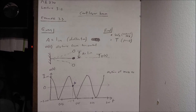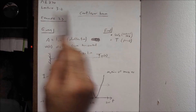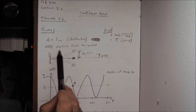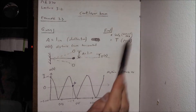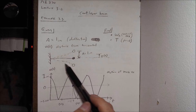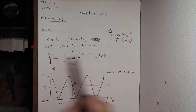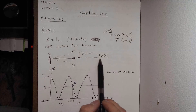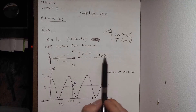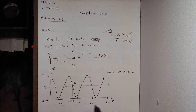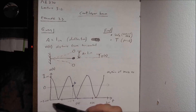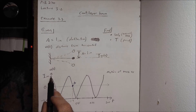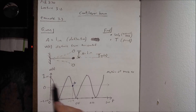This problem is labeled example 3.3. It's a cantilever beam problem. They give us a equal to one inch deflection, and u(t) is the distance from the horizontal. They're asking us to solve for natural frequency, omega sub n, and period T sub n. Here's our cantilever beam with a mass on the end — we pull it up to one inch and release, so a equals one inch. The distance from the horizontal with respect to time is our u(t) function. At time equals zero, u(t) equals one — that's our starting point.